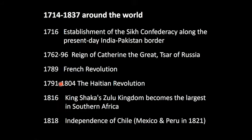The Hanoverian period, often also known as the Georgian period in British history, was a time when on the Indian-Pakistani border the Sikh Confederacy was being established. We also have during this time the reign of Catherine the Great as Czar of Russia, the French Revolution, the Haitian Revolution, the establishment of the Zulu Kingdom in South Africa, and South American countries such as Chile in 1818, and later Mexico and Peru, declaring independence from the Spanish Empire.